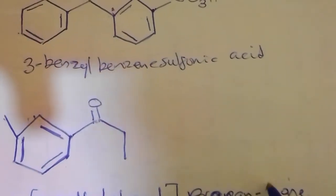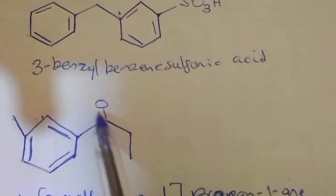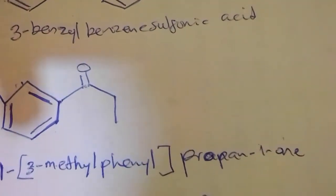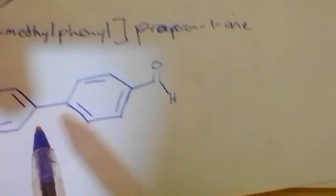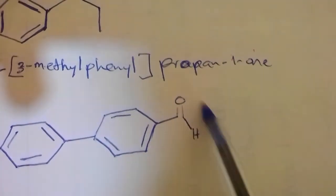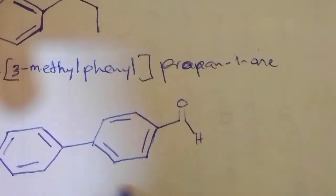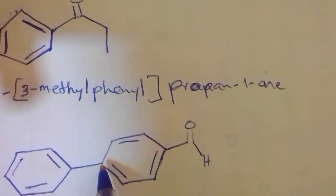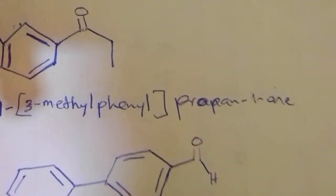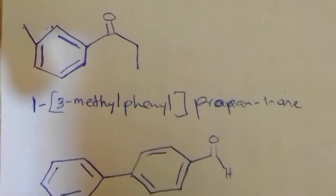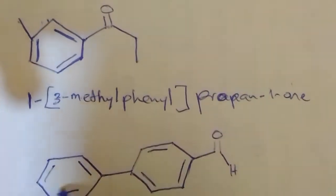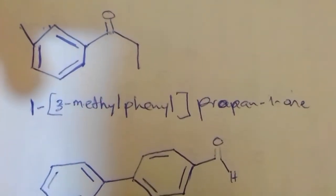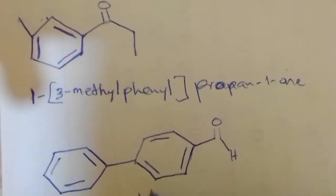Let's look at this one here. The parent structure is benzaldehyde, and this phenyl is at the para position of the benzaldehyde. So here it becomes P- or you can make it 4-phenyl benzaldehyde.